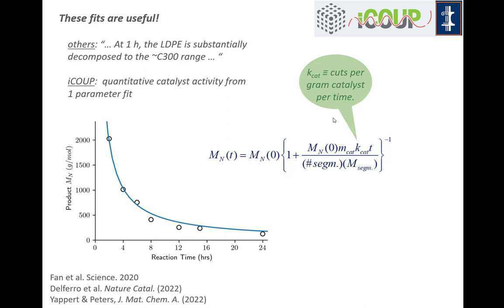These are actually quite useful fits. You can go to the literature and see how depolymerization efforts report their results — saying that after one hour LDPE was this long, after two hours it's shorter, after four hours shorter still. This is a very anecdotal way to report your data. To reproduce it, you need exactly the same amount of catalyst and polymer. What we've begun doing in the iCOOP is using this one-parameter fit to extract the cutting rate per gram of catalyst per time.